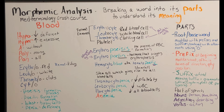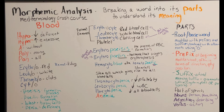Anemia: the prefix 'an' means without, and '-emia' at the end of a word indicates a blood condition. So anemia literally translates to 'without blood.' You can't take that too literally because being without blood means being dead. Anemia actually means you have a decrease in red blood cells or a decrease in the quality of your red blood cells.